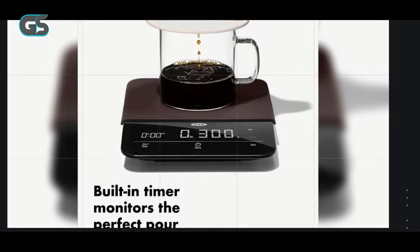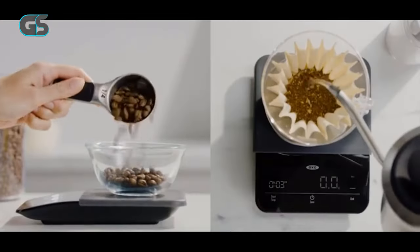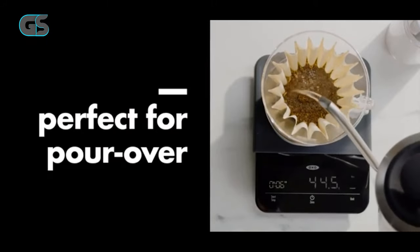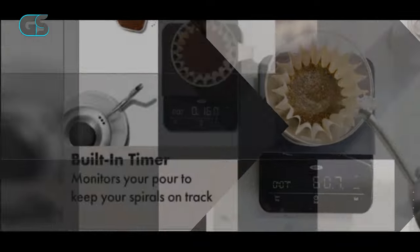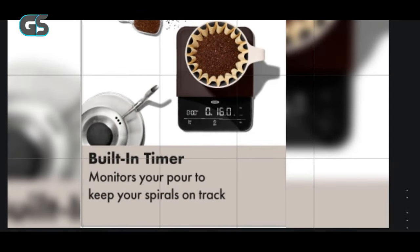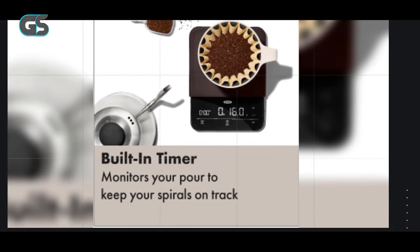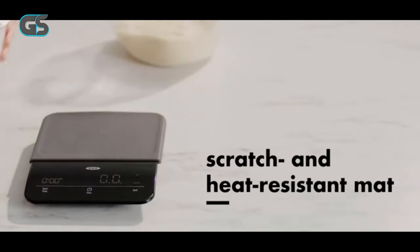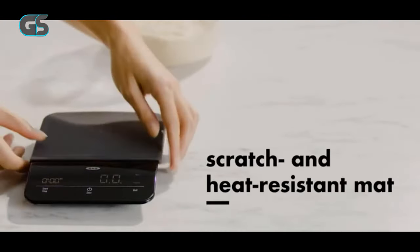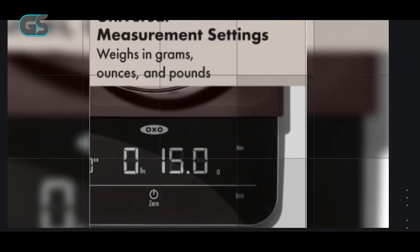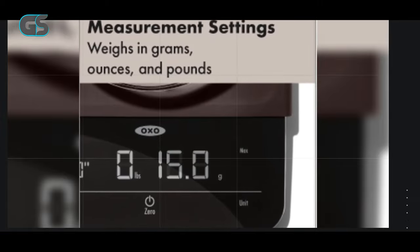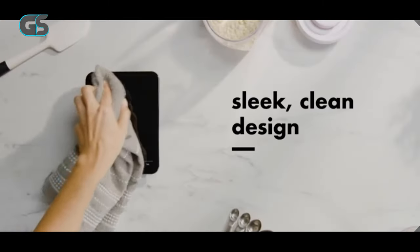The scale's design is a marriage of functionality and aesthetics. Its compact size doesn't clutter your counter space, and the intuitive interface is user-friendly for beginners and experts. Its sleek black finish adds a touch of sophistication to any kitchen or cafe setup. What truly sets the OXO Brew Precision Coffee Scale apart is its commitment to enhancing the coffee experience. By offering precision and control, it empowers you to experiment with different variables, enabling you to fine-tune your brews to your taste.